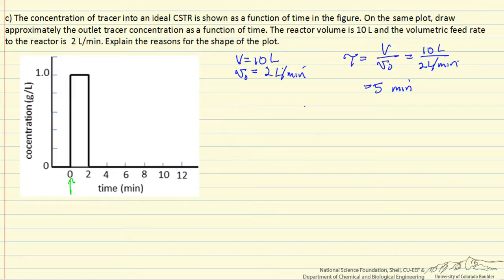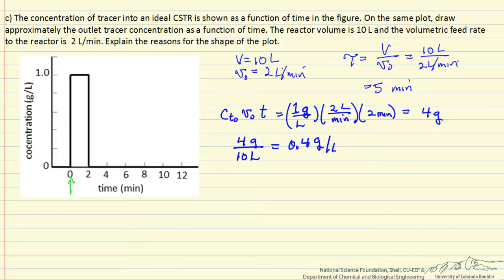The first thing we can do is calculate how much tracer we added in 2 minutes, and that would be the feed concentration of tracer times the volumetric flow rate times the time that we add tracer. I've substituted the values in, and the units cancel. We end up with 4 grams that are added. So if none of the tracer left, we've added 4 grams to a tank that has a volume of 10 liters. This means the maximum concentration we could have is 4 tenths of a gram per liter. But we know material has left.